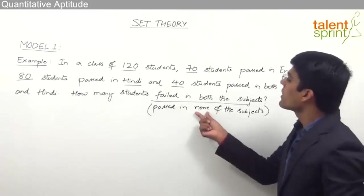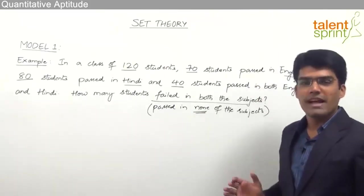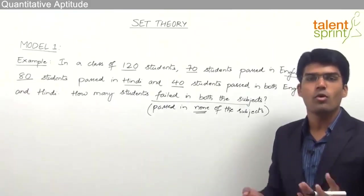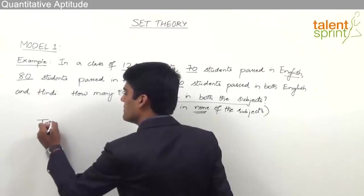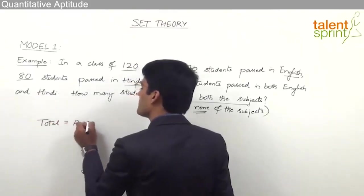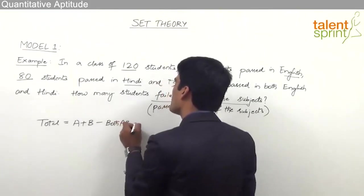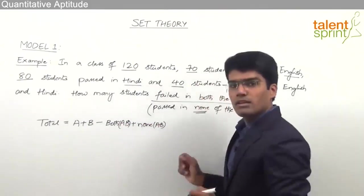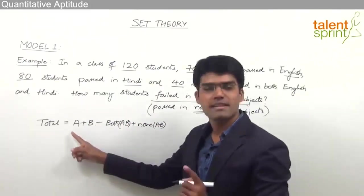We need to find the none category. There are two ways to solve this question: either using the simple formula or using Venn diagrams. Going by the formula, we know that total equals A plus B minus both AB plus none of AB. Simply by substituting the values, we can get the required answer.